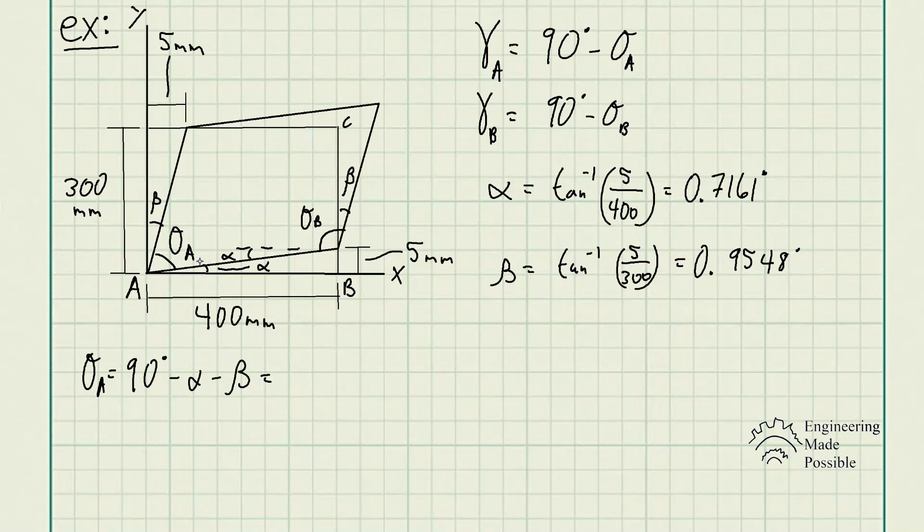And now theta B is equal to 90. In this case, we add alpha and we also add beta because the angle actually increased, which gives us 91.6709 degrees.